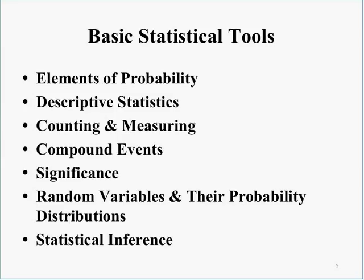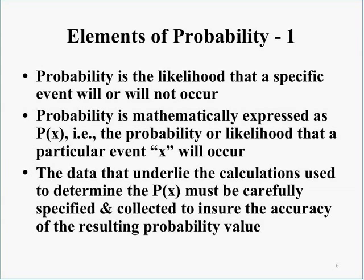We'll start out with elements of probability, look at descriptive statistics, counting and measuring, compound events, significance, random variables and their probability distributions, and finally statistical inference. Probability is the likelihood, the chance, that a specific event will or will not occur. Probability is usually expressed mathematically as P(X) — the probability or likelihood that a particular event X will occur. The data underlying the calculations used to determine P(X) must be carefully specified and collected to ensure accuracy.